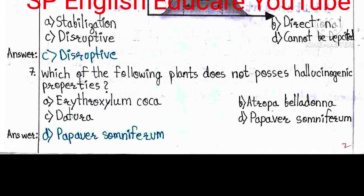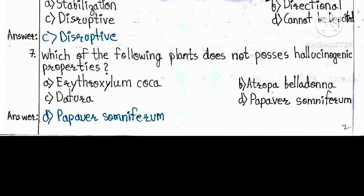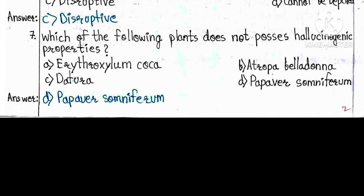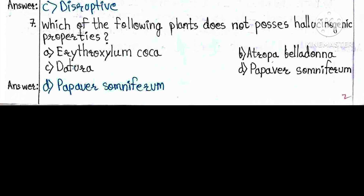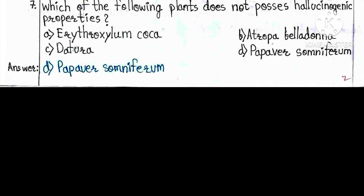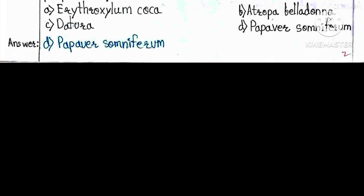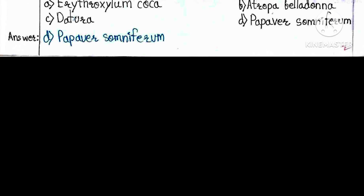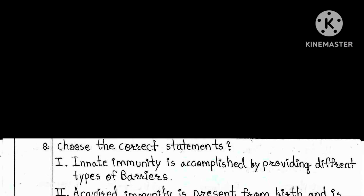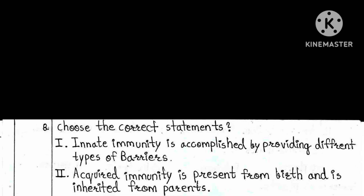Question 7: Which of the following plants does not possess hallucinogenic properties? A) Erythroxylum coca, B) Atropa belladona, C) Datura, D) Papaver somniferum. The answer is D — Papaver somniferum.